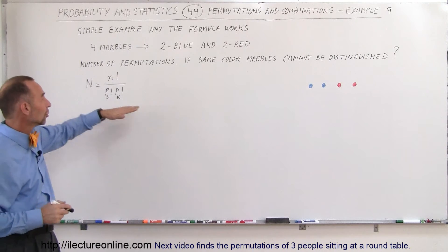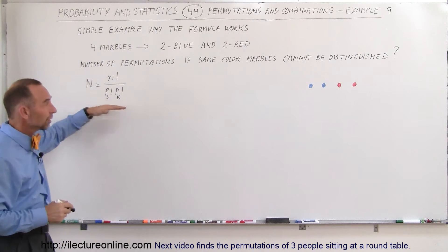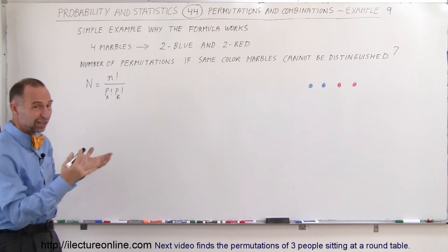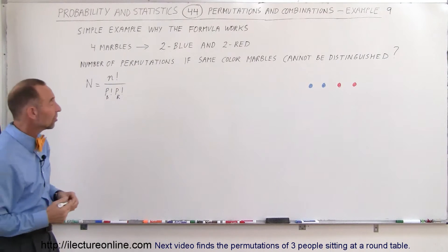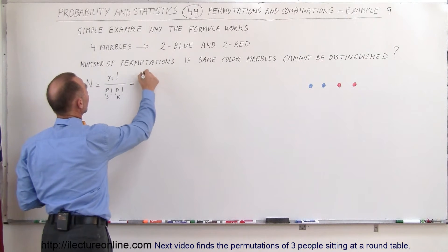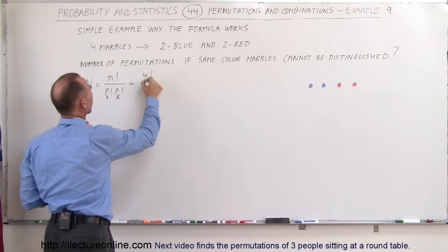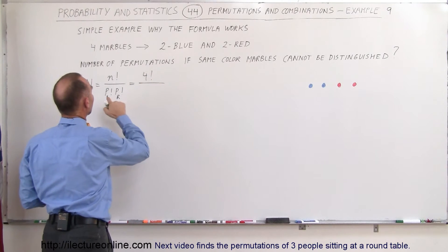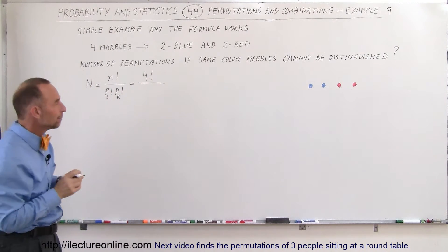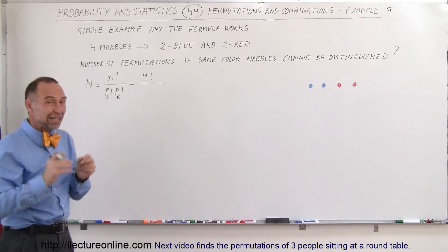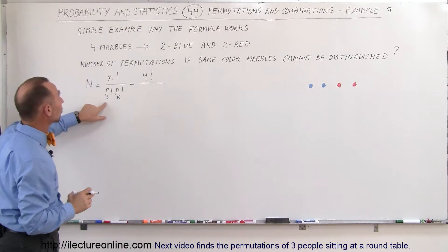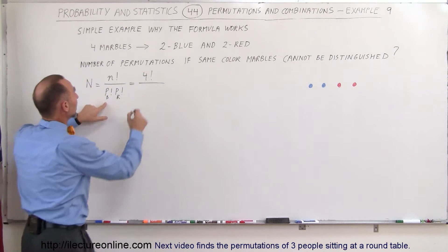So we're going to apply the formula and then show how it actually works so you can see the answer should be the same. In this case, 4 marbles means it's 4 factorial, divided by the number of ways in which the blue marbles can be rearranged if they could be distinguished among themselves, and since there's two of them,